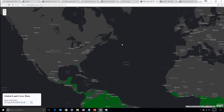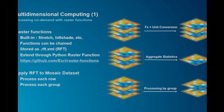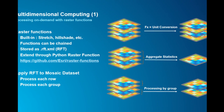That's the end of the first section. Now this section will talk about multidimensional computing. An important feature for multidimensional image services, besides visualization, is computing — specifically on-demand computing using raster functions. A raster function is an algorithm that takes input pixels and produces output pixels based on neighborhood pixels from the input.